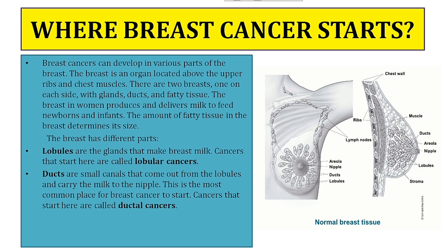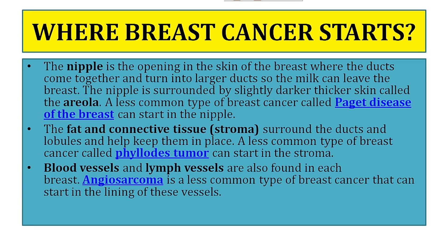The ducts are the most common place where breast cancer can start. Cancer that starts here is called ductal cancer. The nipple is the opening in the skin of the breast where the ducts come together, allowing milk to leave the breast. The nipple is surrounded by slightly darker, thicker skin called the areola.